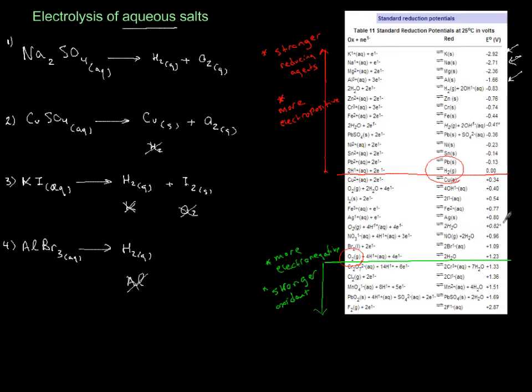What about bromine versus oxygen? If you look at bromine you will see bromine requires 1.09 versus 1.23, so less voltage required, so bromine comes out as liquid and oxygen does not get a chance.